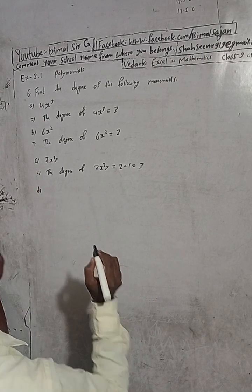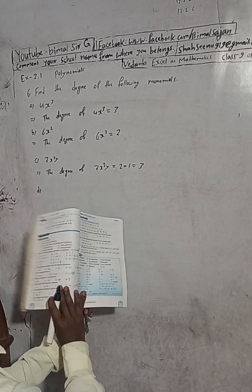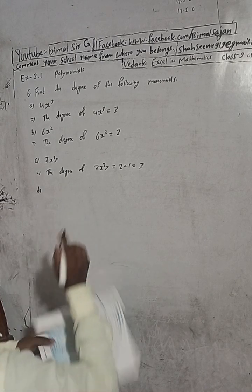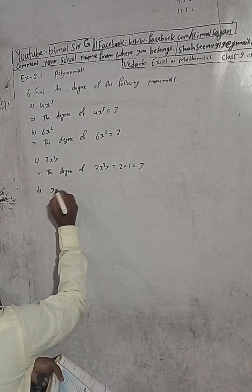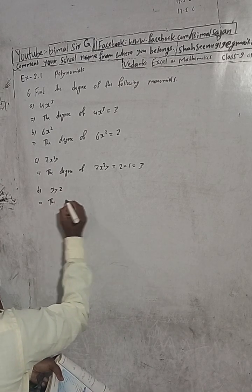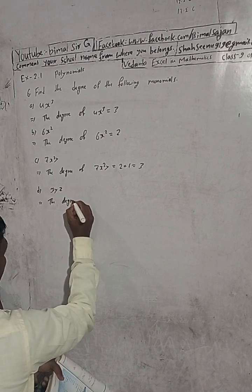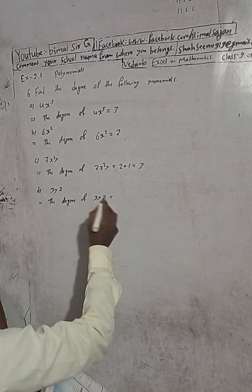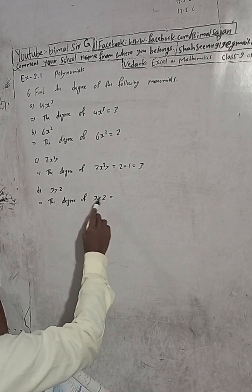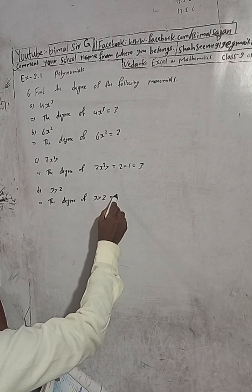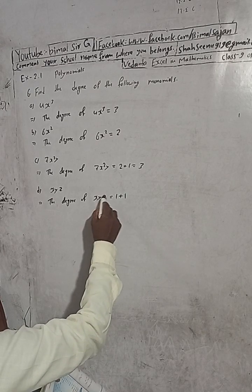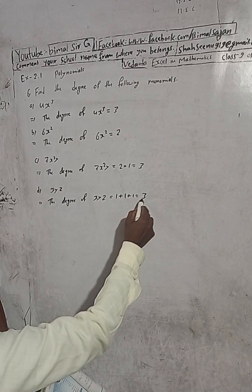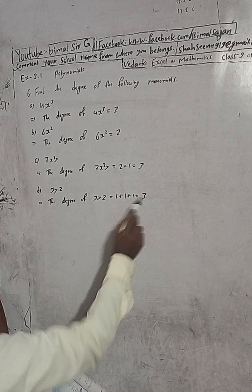Now question 6(d): the monomial is xyz. So the degree of xyz — you can see there are 3 variables: x, y, and z. The power of x is 1, the power of y is 1, and the power of z is 1. So 1 plus 1 plus 1 altogether is 3. Therefore the degree of xyz is 3.